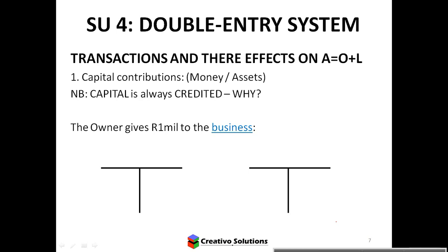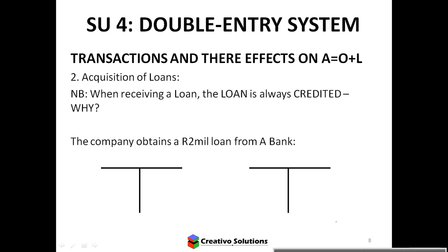First scenario: the owner gives one million to the business. Capital increases on the credit side. The other account affected is bank, which is an asset, so it increases and is debited. Both accounts are increasing.